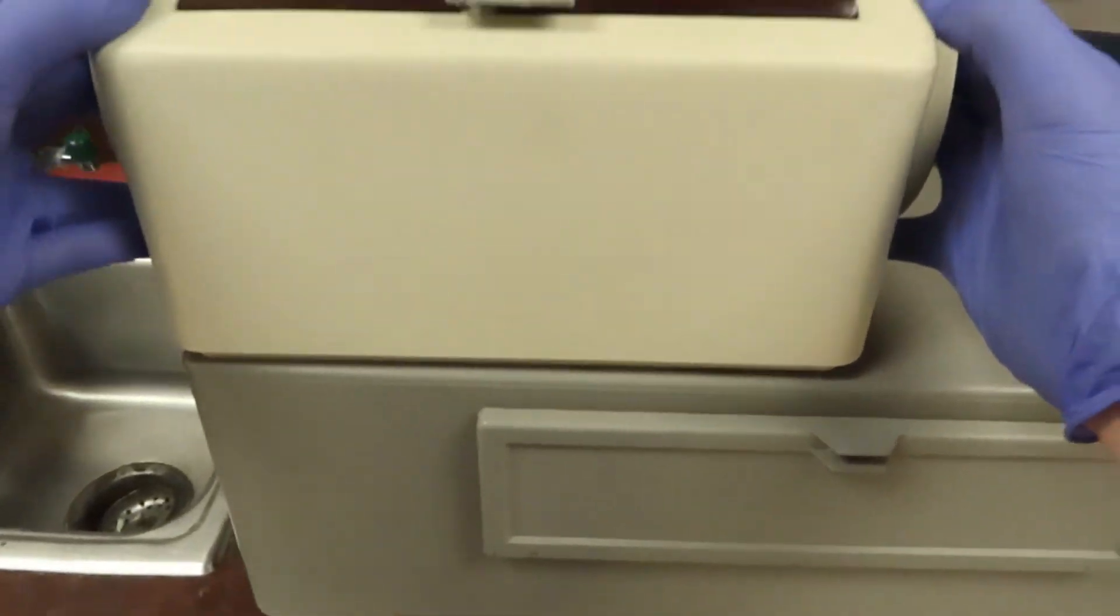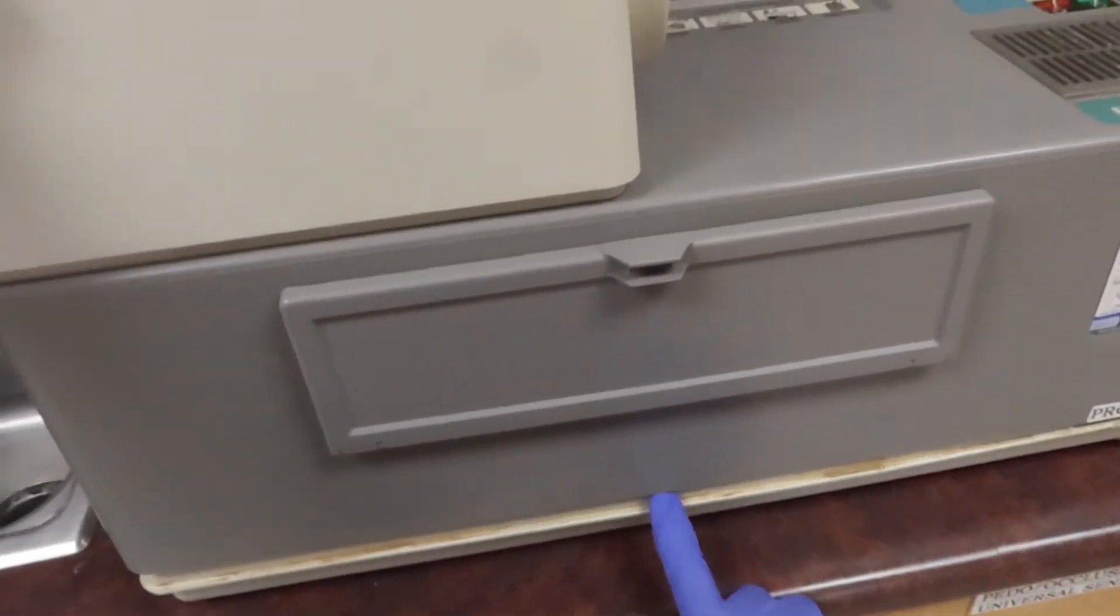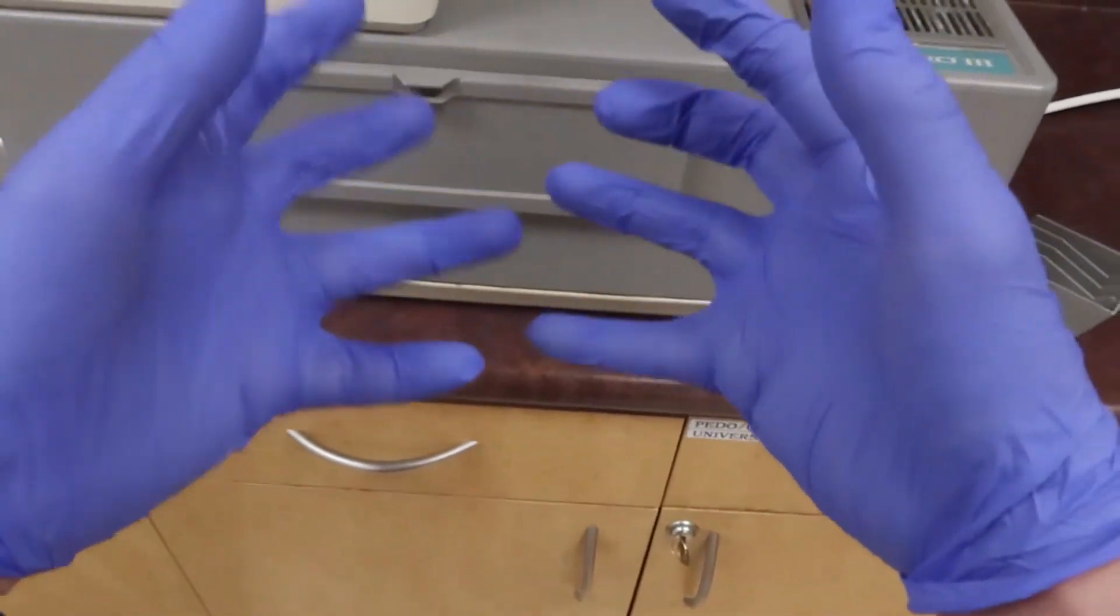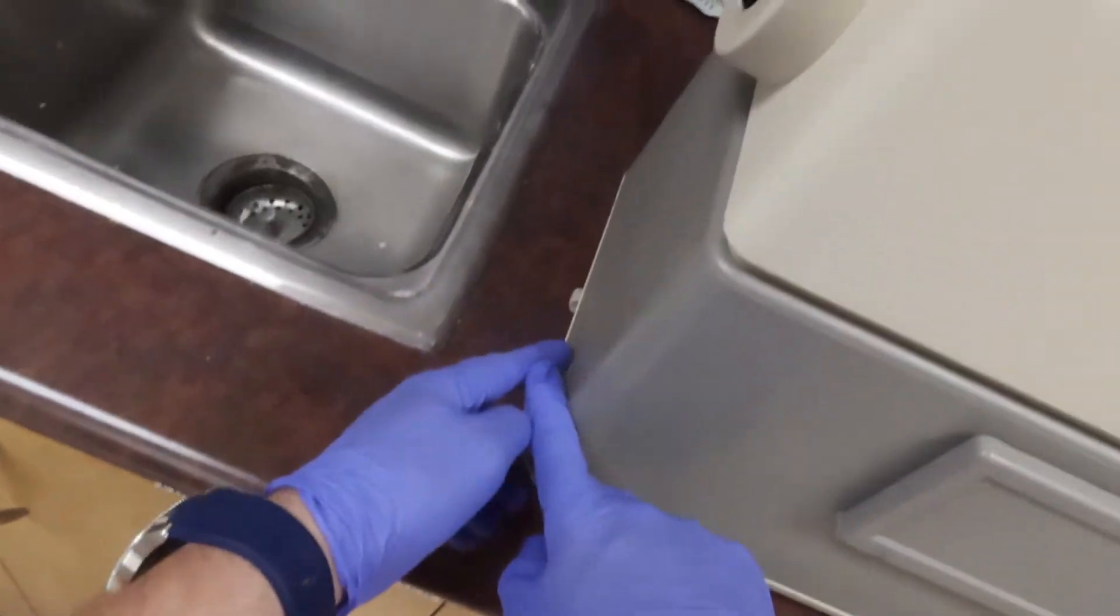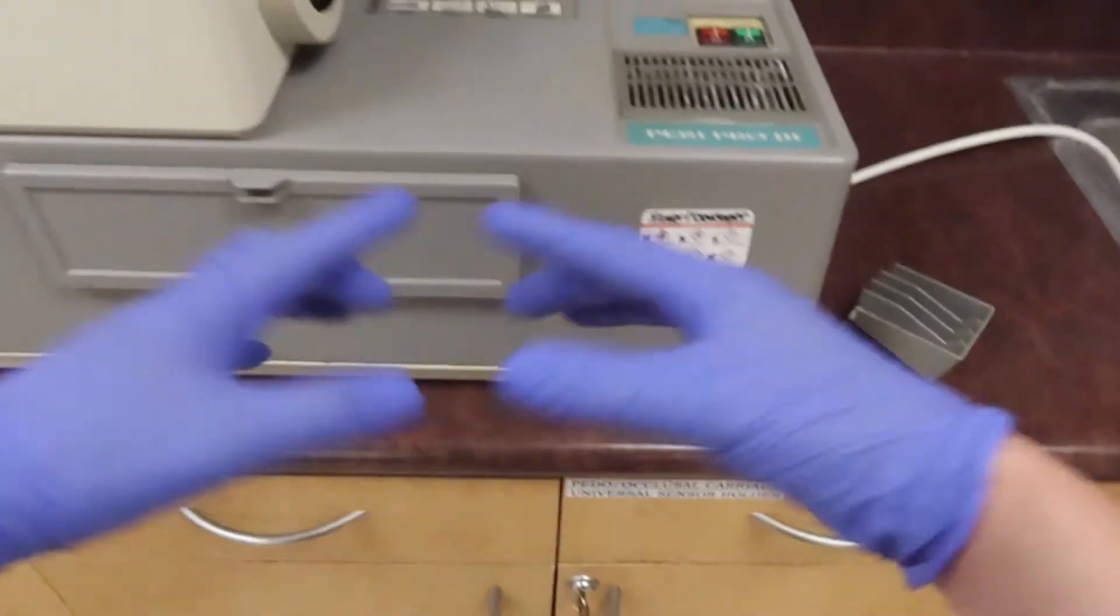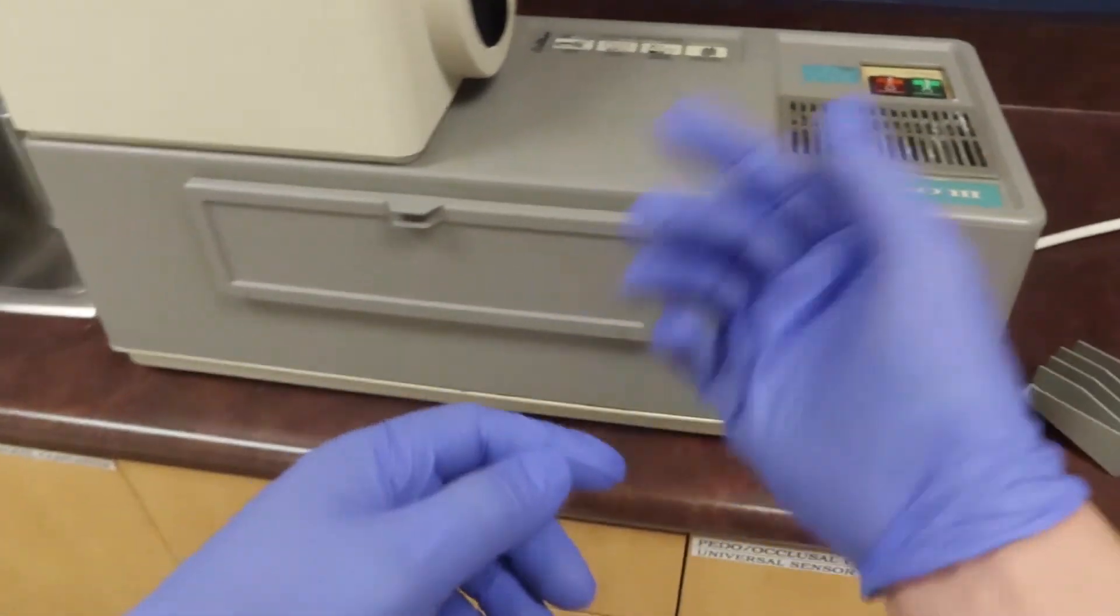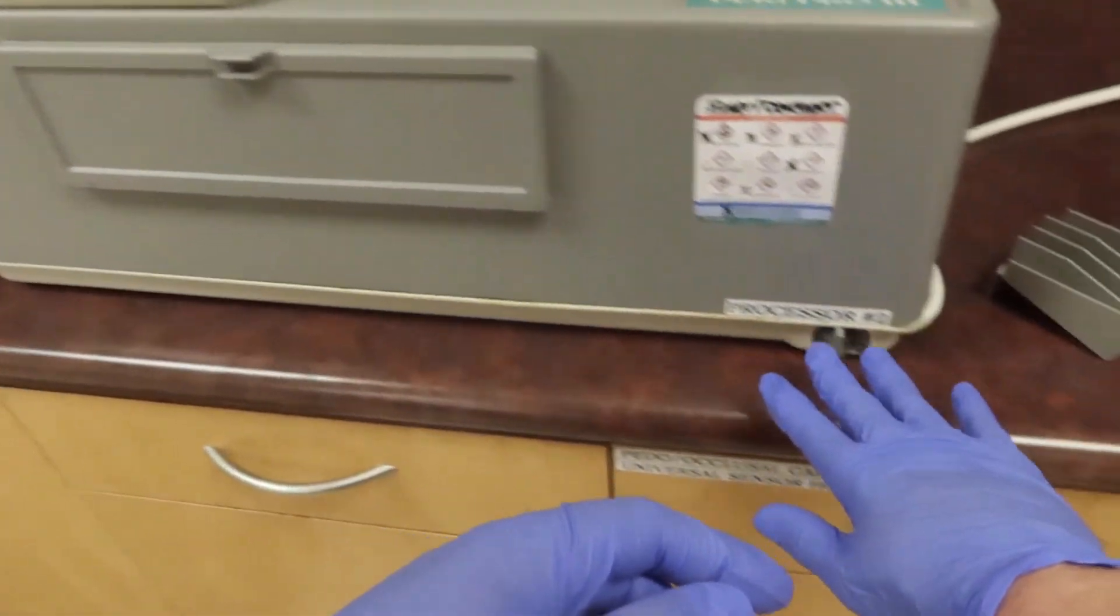Make sure that this is nice and snug so that we don't have any light that can pierce through here and ruin our x-rays, getting us super frustrated. Now that I've checked over all my pieces and it looks like it's all good, one thing that's going to stick out from this - the water bin is going to drain out over here where we have this little drain knob.